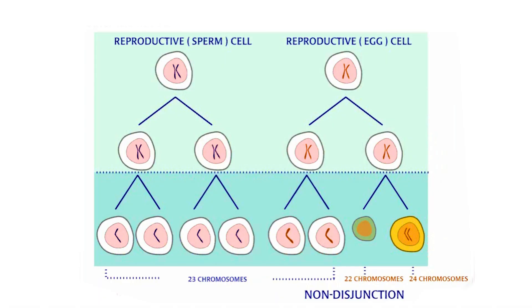When non-disjunction occurs, the resulting gametes will have an abnormal chromosome count. One cell will have 22 single chromosomes and the other will have 24.